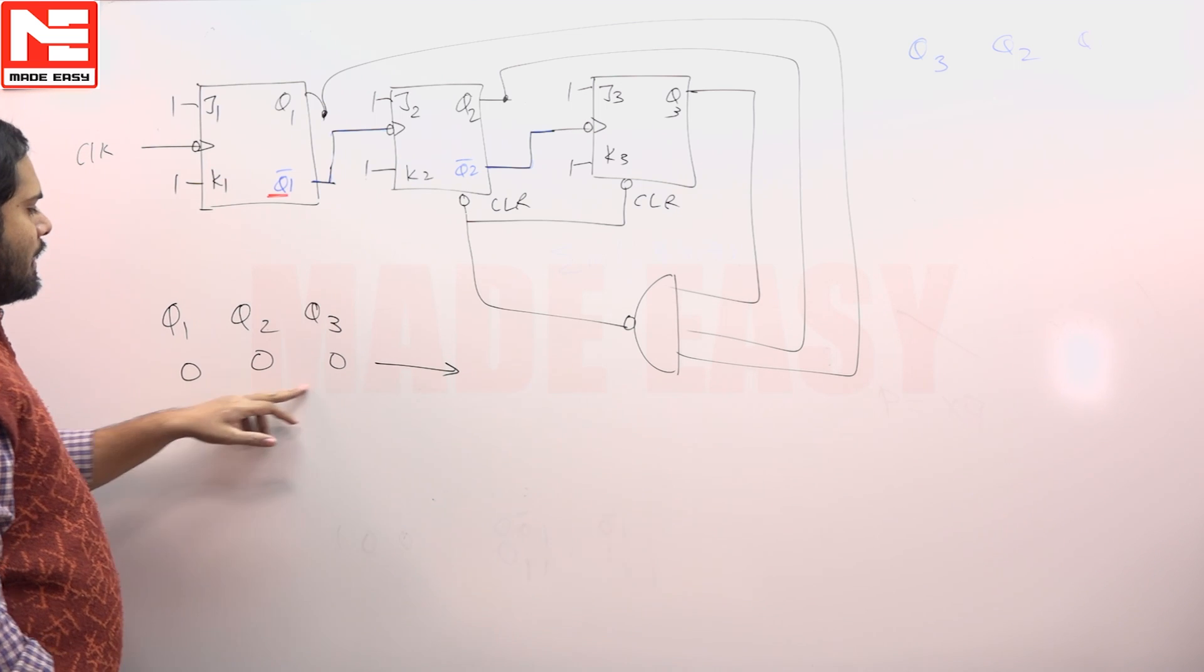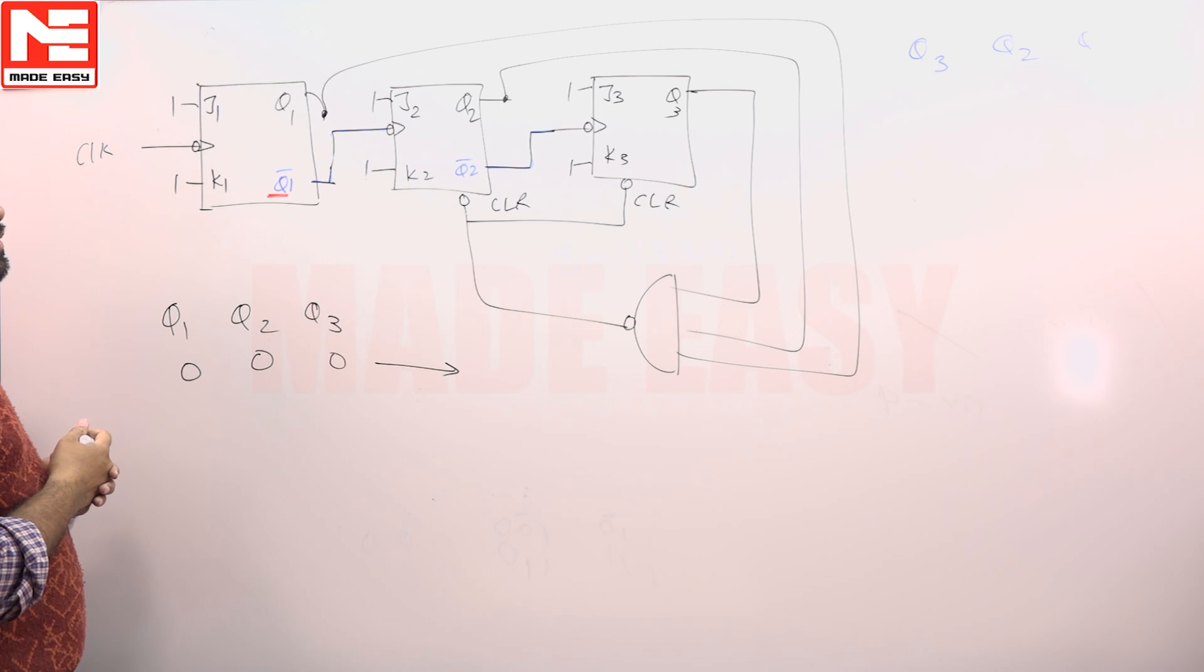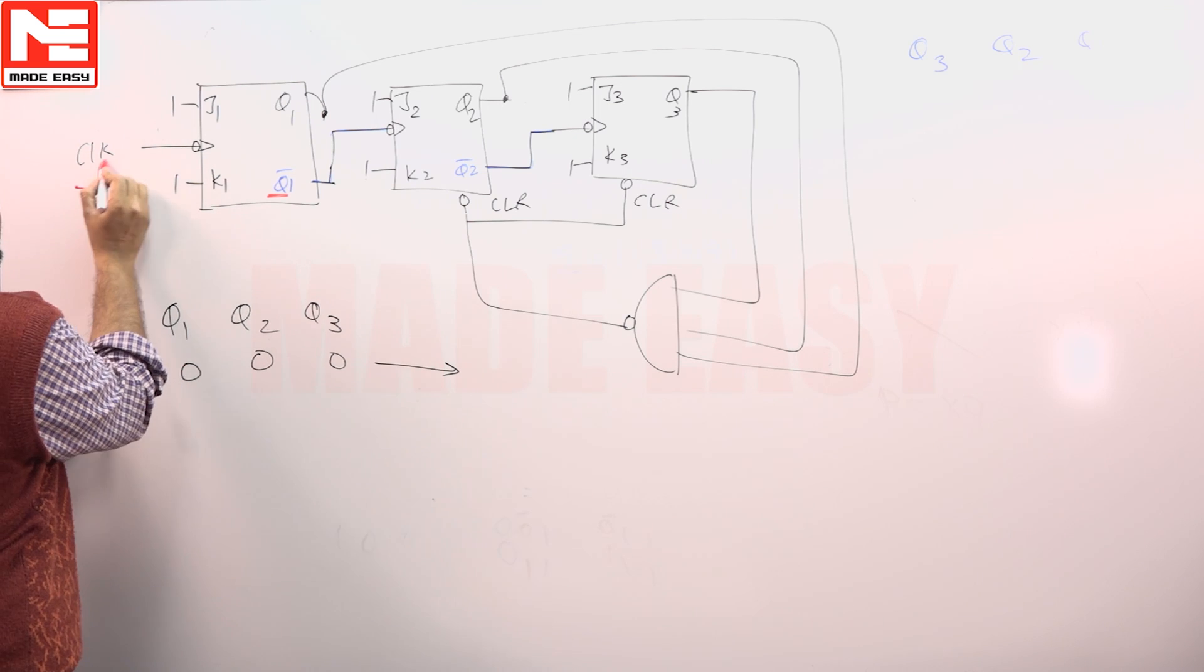So let us say the starting state is 0 0 0. You can take any state. Let us say the starting state is 0 0 0. When you take starting state as 0 0, next time what happens when you apply a clock pulse here?